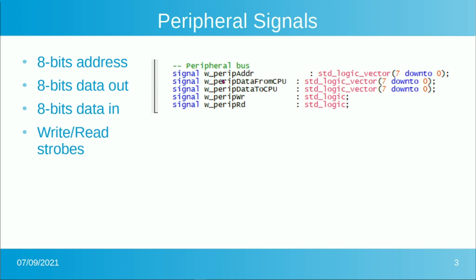The next lines are data from the CPU and data to the CPU. Using names like this makes it obvious which direction data flows — if it were just 'peripheral data out' and 'peripheral data in', you'd wonder which goes which way. And then there are the two strobes: the write and read strobes, peripheral write and peripheral read.